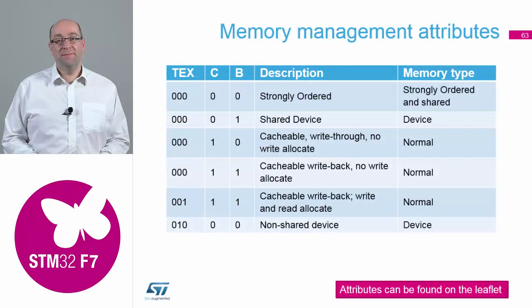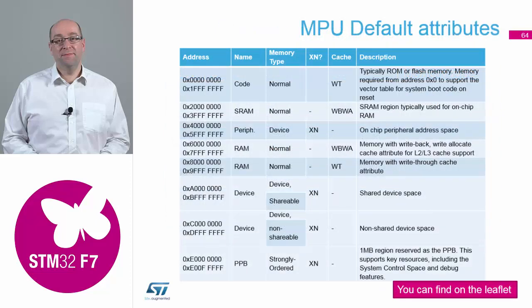These are the memory attributes — the text information that Yoshi was discussing earlier about how each area can be allocated. You can decide which type of memory it is: normal or device memory, whether it's non-shareable, cacheable, and how the read allocates. You can do that for each of the eight different sections on the MPU.